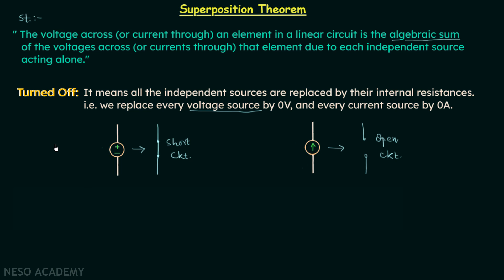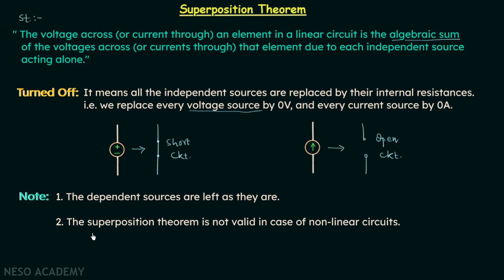Before we move on to the example, we will note down two important points. First, we do not turn off the dependent sources — the dependent sources are left as they are. Second, the superposition theorem is not valid in the case of non-linear circuits.